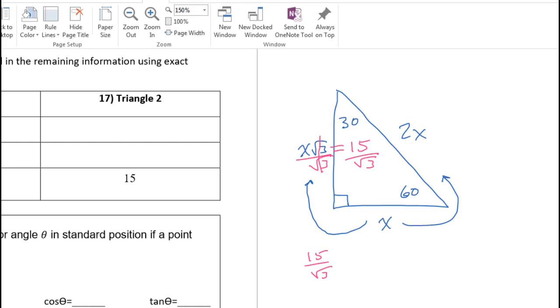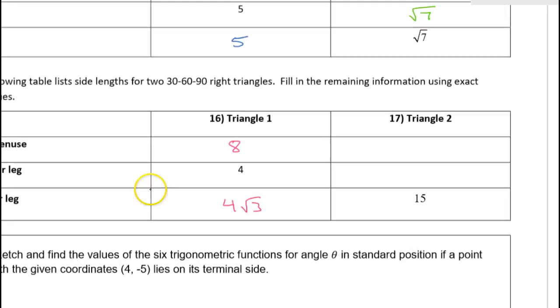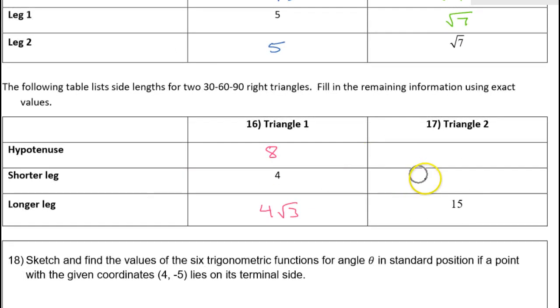We will rationalize the denominator by multiplying by radical three in the top and the bottom. That's going to give us 15 radical three over three, which gives us five radical three. So that is the short leg.